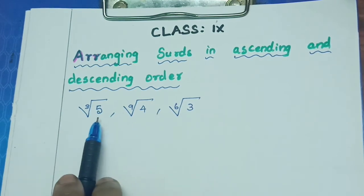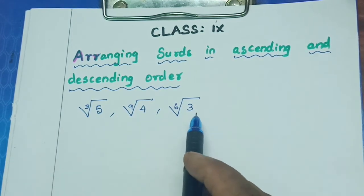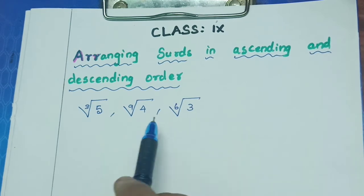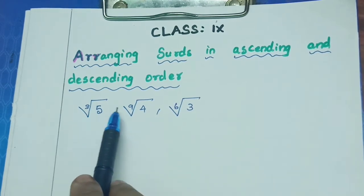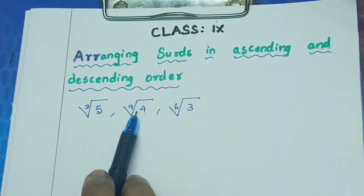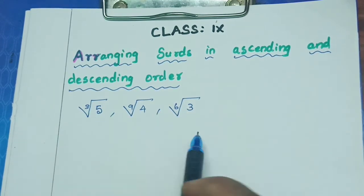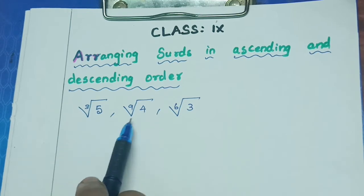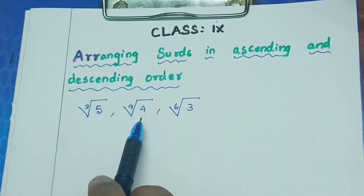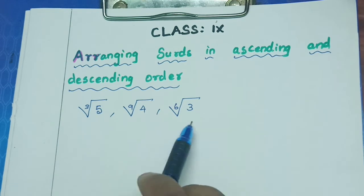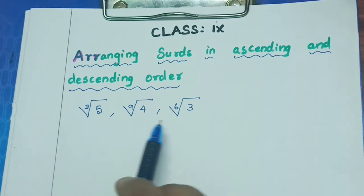If the order is the same, you can easily arrange them — which is greater, which is smaller. But here the orders are different. So the first step is to convert all the surds into the same order. They are all unlike surds, so you have to convert every surd into the same order.